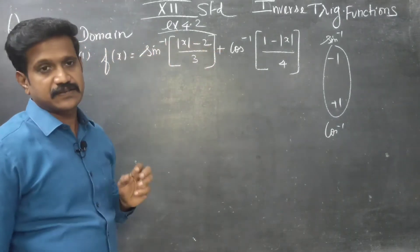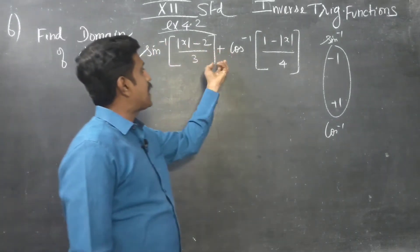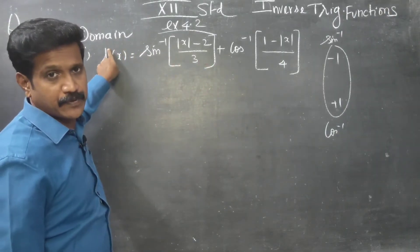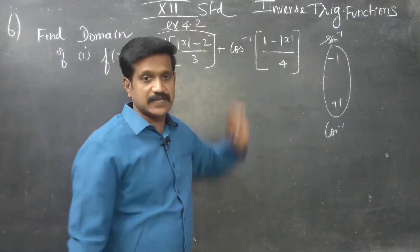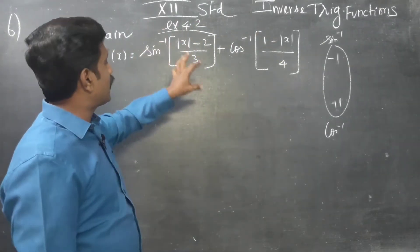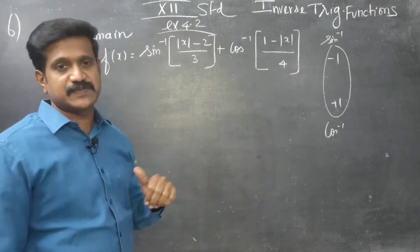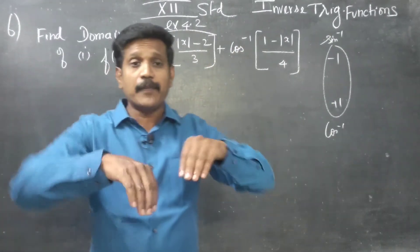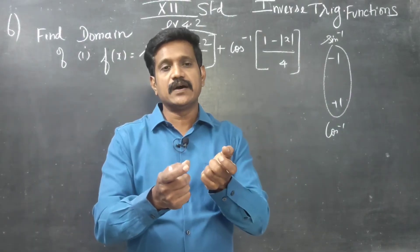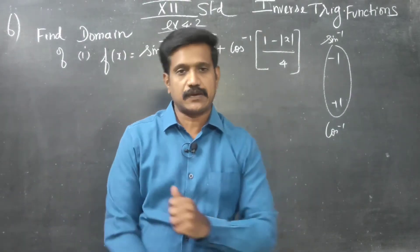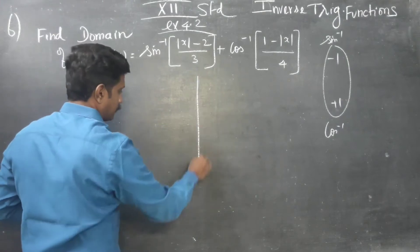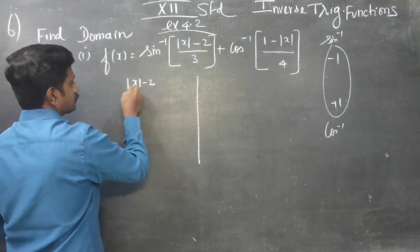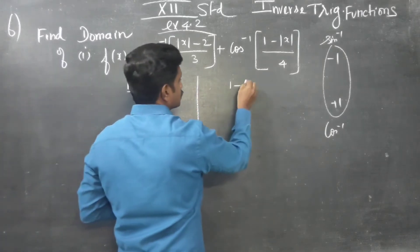Now, there are 2 functions here. Since both sine inverse and cos inverse are present, we need to find where both domains are satisfied. We need to analyse both: the sine inverse condition and the cos inverse condition. These 2 functions share a common domain requirement.